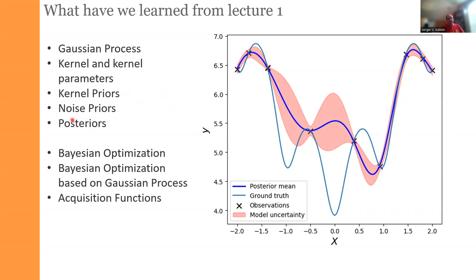We dived into the concept of the posterior. Generally, a prior is what we believe before the experiment. A posterior is how the prior knowledge is updated during the experiment. This is the whole philosophy of Bayesian inference, and it's also how science works overall.